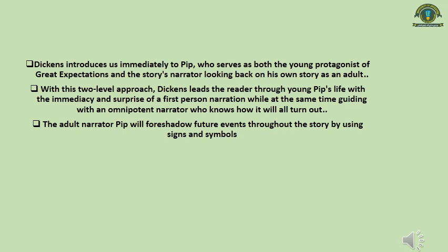In the first section, Dickens introduces us immediately to Pip, who serves as both the young protagonist of Great Expectations and the story's narrator, looking back on his own story as an adult. With this two-level approach, Dickens leads the reader through Pip's life with the immediacy and surprise of first-person narration, while at the same time guiding with an omniscient narrator who knows how it will all turn out. The adult narrator Pip will foreshadow future events throughout the story using signs and symbols. These three points form the complete background of the whole novel.